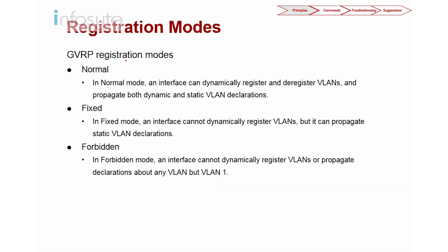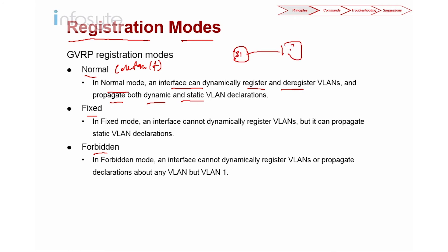Next, let's look at GVRP registration modes. There are three modes: normal, fixed, and forbidden. Normal mode is the default. In normal mode, an interface can dynamically register and deregister VLANs and propagate both dynamic and static VLAN declarations. So if VLAN 2 is created on Switch 1, it propagates to Switch 2 and Switch 3, and removing it also propagates the deregistration.